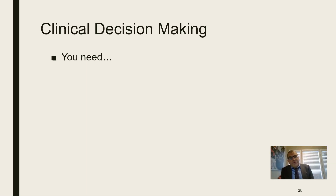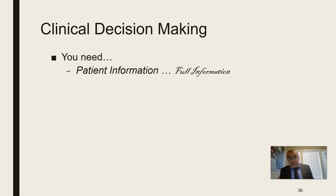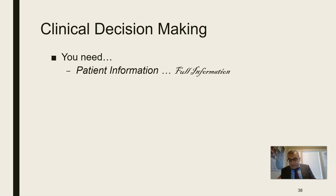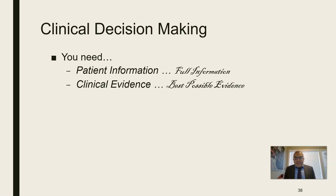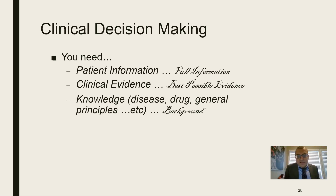In other words, to make a clinical decision you need: full, relevant patient information — relevant to the condition or issue you are dealing with. You also need clinical evidence — the best possible evidence, because not every area in medicine has strong Level 1a evidence. So get the best possible evidence for using a certain medication for a certain condition, given the patient's circumstances.